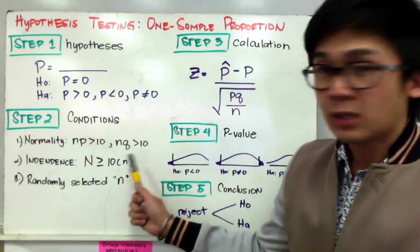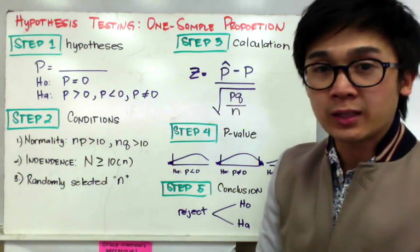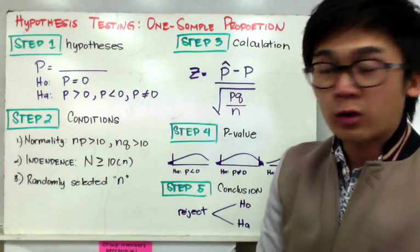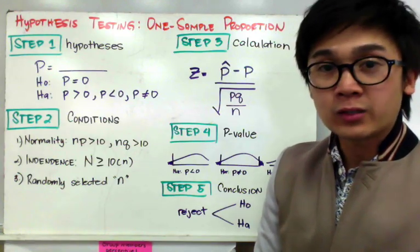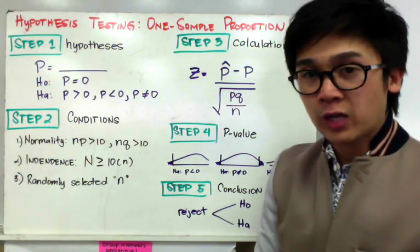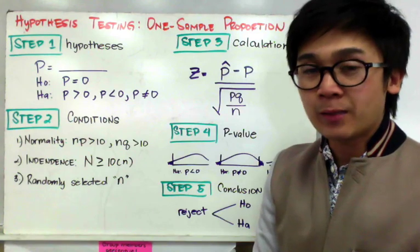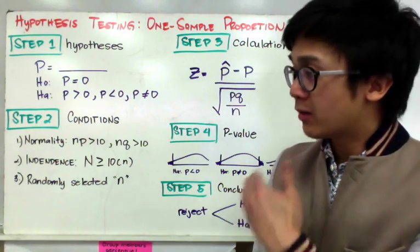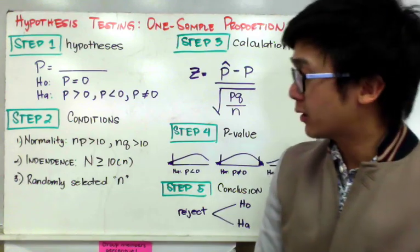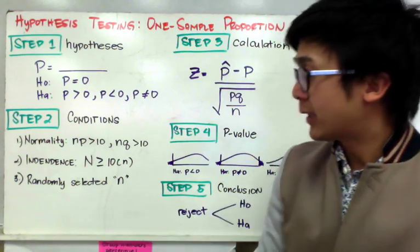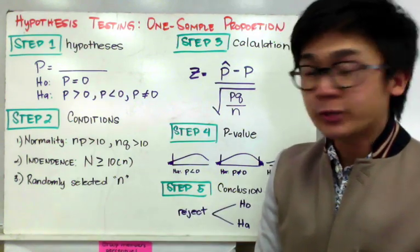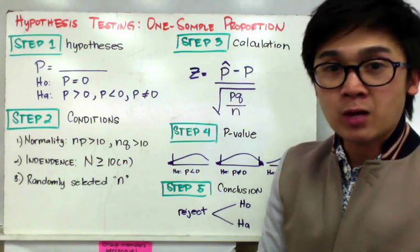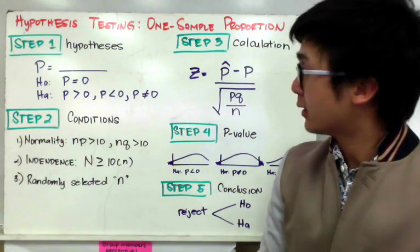For independence, we need to know that the population is bigger than 10 times the sample size, or the word problem may indicate that each trial is independent and not dependent on the succeeding trial. Our sample should also be randomly selected, just as in hypothesis testing for the sample mean.